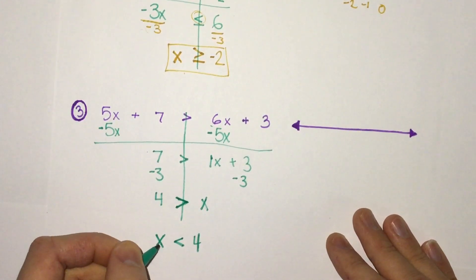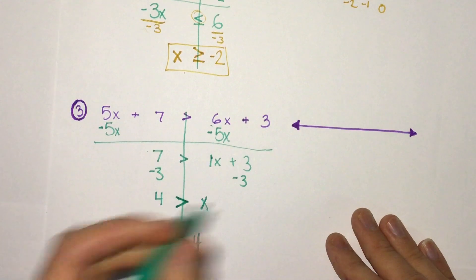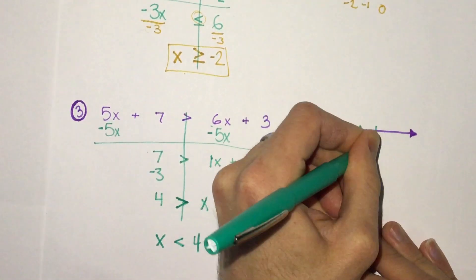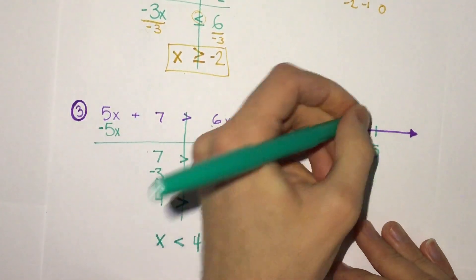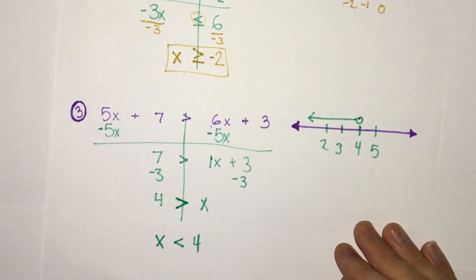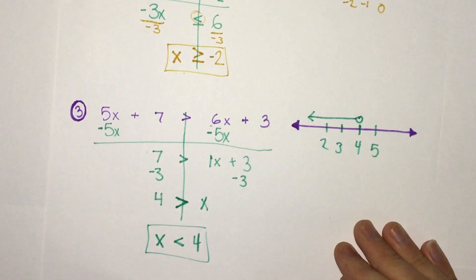So our graph, we'll put 4 in the center and it's not equal to, so open circle. Less than means going to the left, and we have our answer.